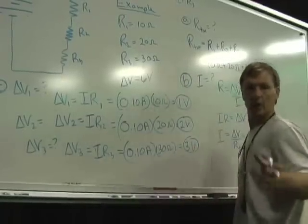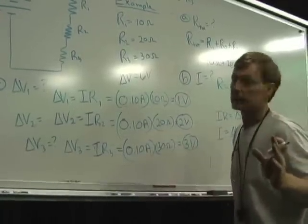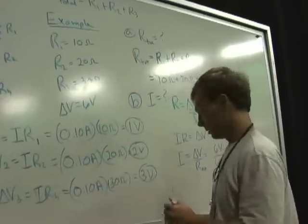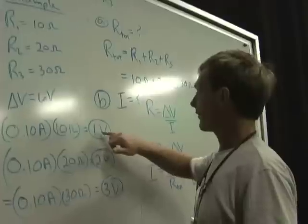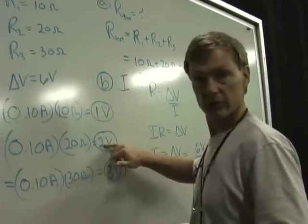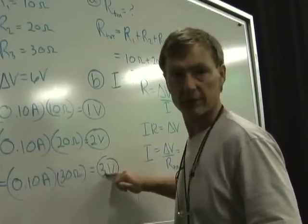Now check it out. You're going to drop 6 volts no matter what you do. The current adjusts that way. I've got 1 volt plus 2 volts is 3 volts plus 3 volts. I have 6 volt drop across there.